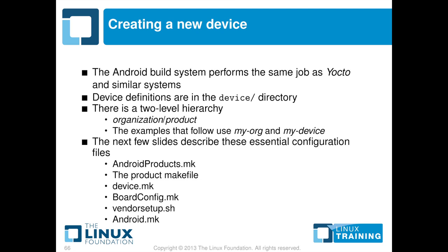Now we're going to look at how to create a device profile for using the Android build system. The situation is you've got a new piece of hardware and you want to run Android on that hardware. It does the same kind of job that things like Buildroot and Yocto do for regular embedded Linux. There is a fairly straightforward hierarchy: there is a sub-directory in the devices directory, one for the organization, and within that, a sub-directory for each product that organization builds. In the examples that follow, I'm using my-org for the organization and my-device for the device. Within that directory, there are five files that are essential, and I'm going to step through those fairly quickly.